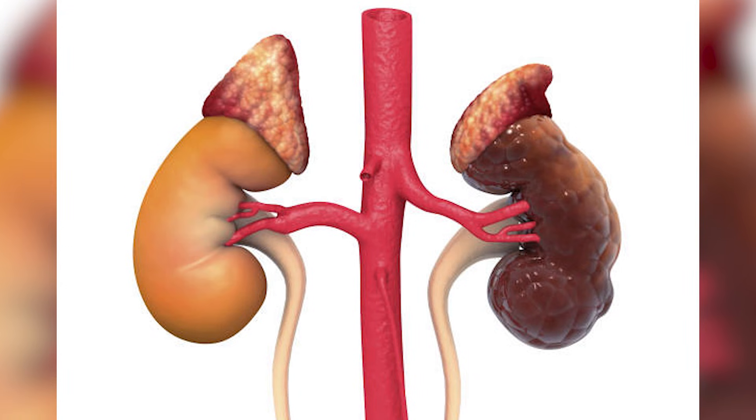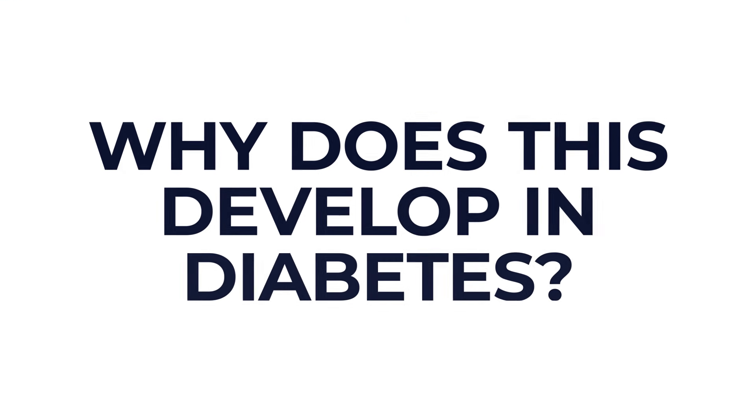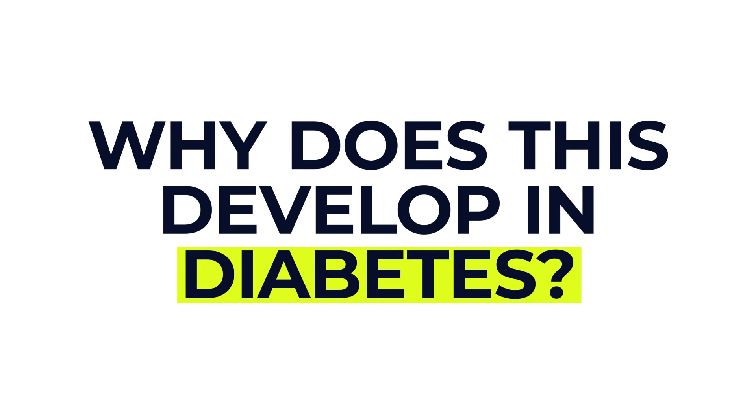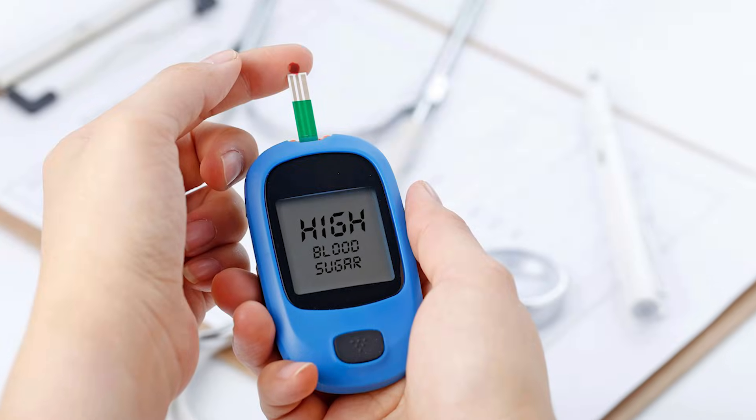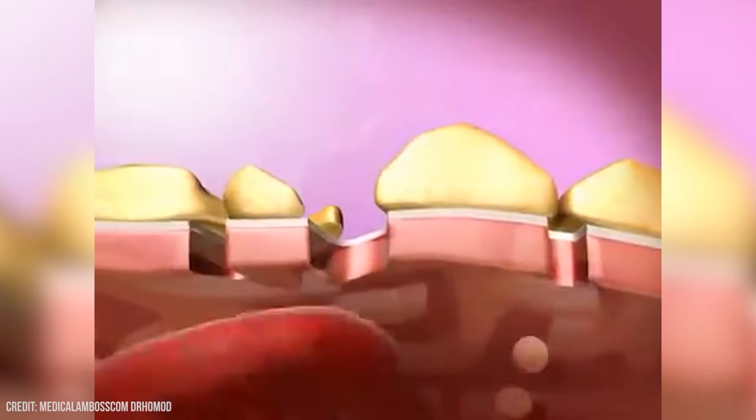If it gets really advanced it can lead to kidney failure. When your blood sugar is high it triggers certain chemical changes in your kidneys that make the glomeruli leakier. Over many years, scarring can build up replacing healthy kidney tissue. If the kidneys become too scarred they can't filter your blood the way they're meant to, and that's when kidney failure becomes a risk.